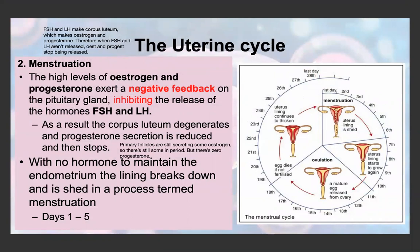The high levels of estrogen and progesterone exert a negative feedback loop on the pituitary gland, inhibiting the release of FSH and LH. Because there is high estrogen and progesterone, this signals the pituitary gland to release lower levels of FSH and LH. Since there are low levels of FSH and LH, nothing is maintaining the corpus luteum — because FSH and LH are what maintain the corpus luteum.